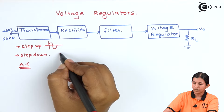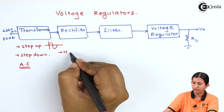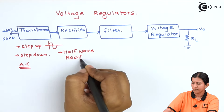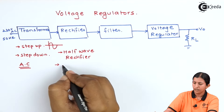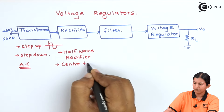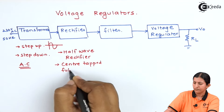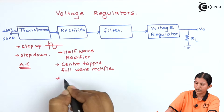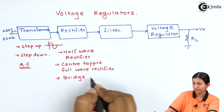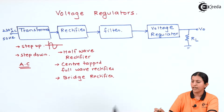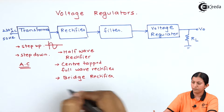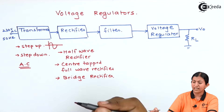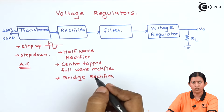There are three types of rectifier: one is the half wave rectifier, then the center tap full wave rectifier. Since the efficiency of the bridge rectifier is higher, we can use the bridge rectifier as well as the center tap full wave rectifier.